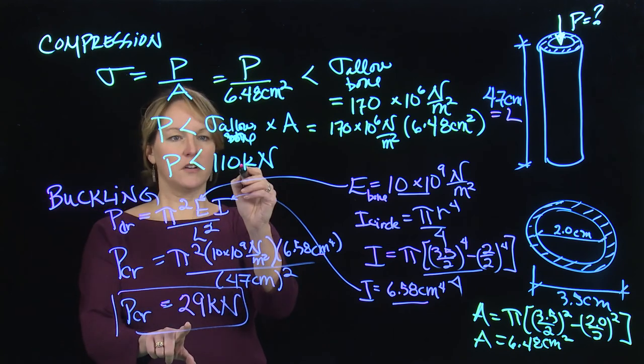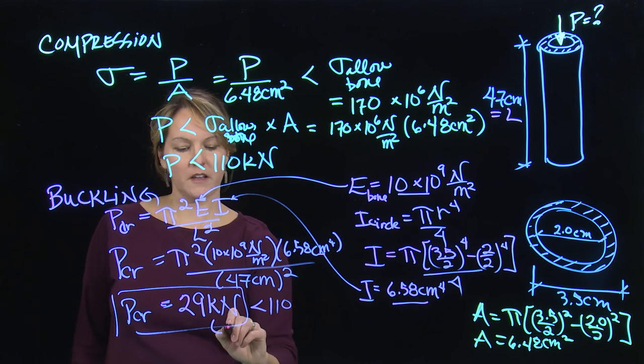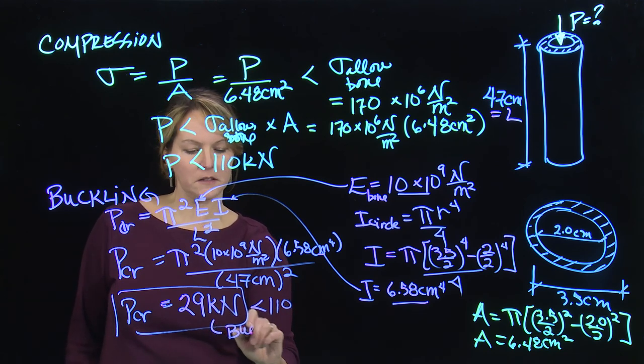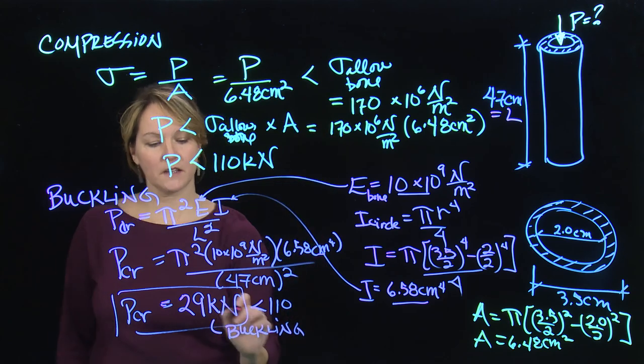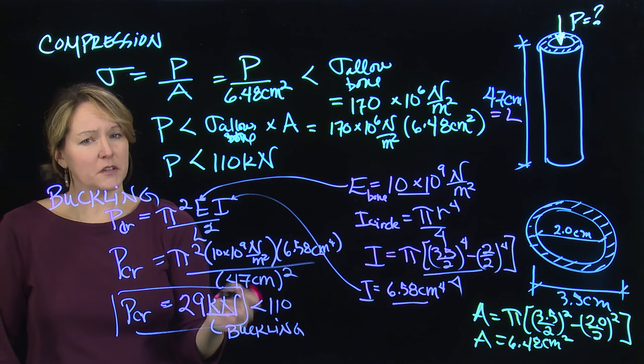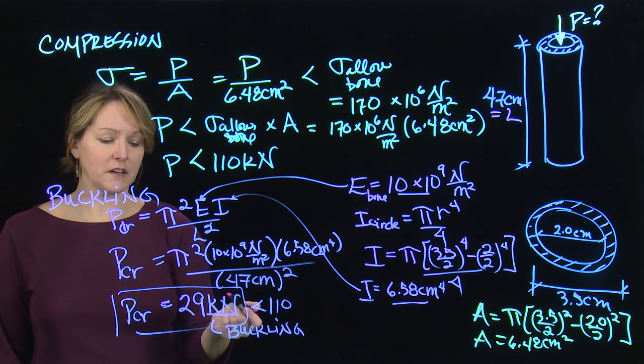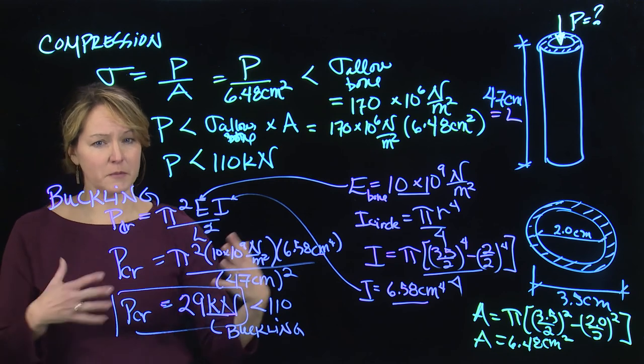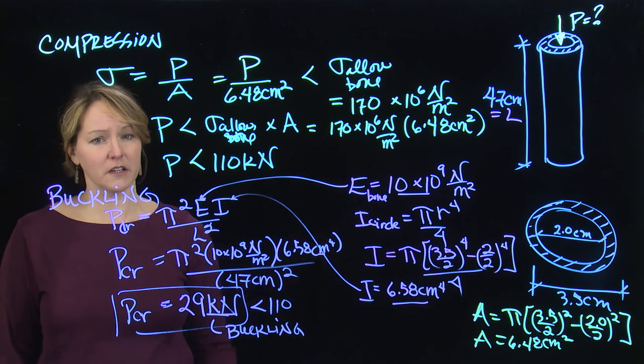And this is much less than the 110. So this would be the failure. Critical is buckling. It's going to buckle before it fails in crushing. So this is the max load that can be applied to the femur. It's much greater than the weight of a typical human. So the femur is not going to break or fracture just by standing. But an impact either laterally or vertically could cause damage.